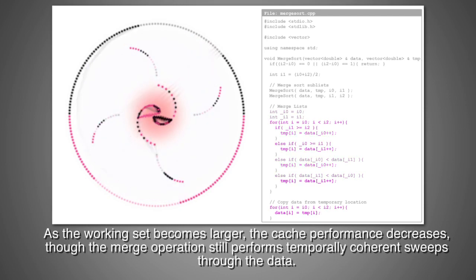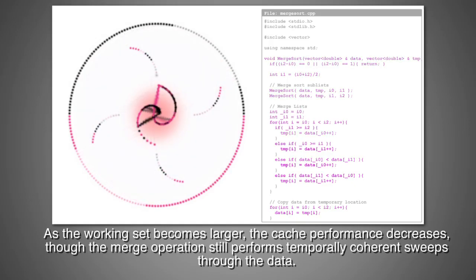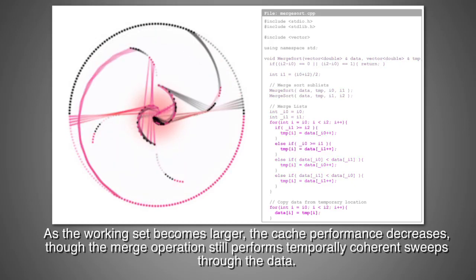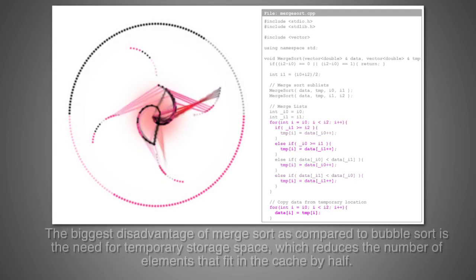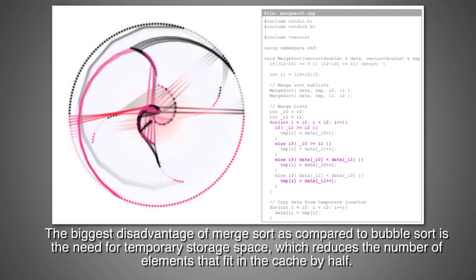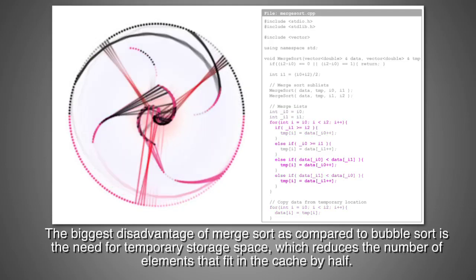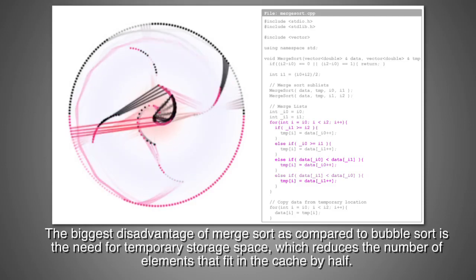As the working set becomes larger, the cache performance decreases, though the merge operation still performs temporally coherent sweeps through the data. The biggest disadvantage of merge sort, as compared to bubble sort, is the need for temporary storage space, which reduces the number of elements that fit in the cache by half.